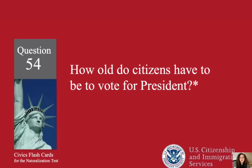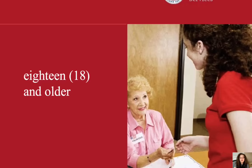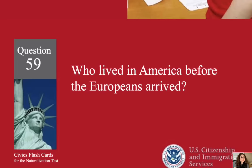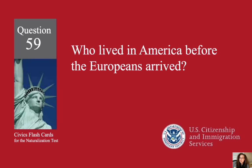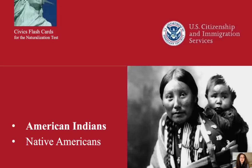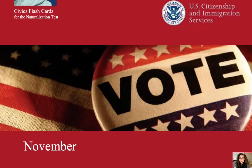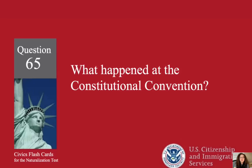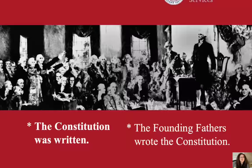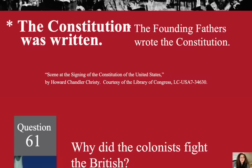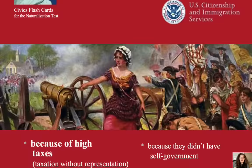How old do citizens have to be to vote for president? Eighteen and older. Who lived in America before the Europeans arrived? American Indians. In what month do we vote for president? November. What happened at the Constitutional Convention? The Constitution was written. Why did the colonists fight the British? Because of high taxes.